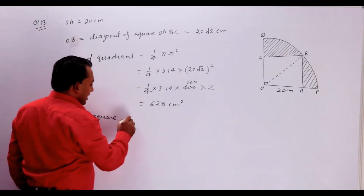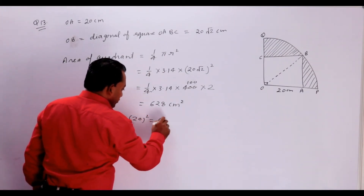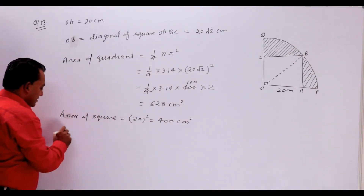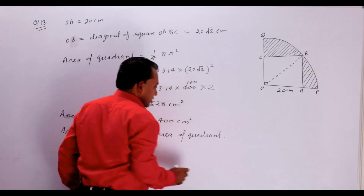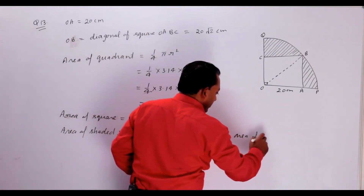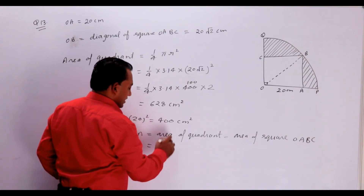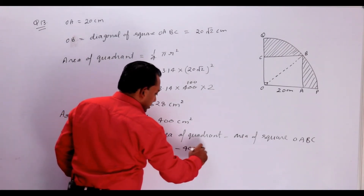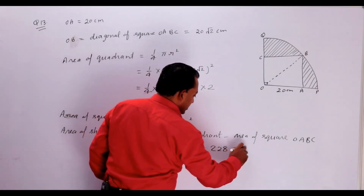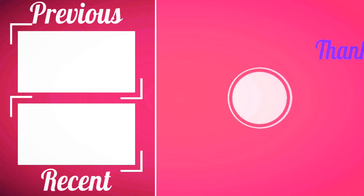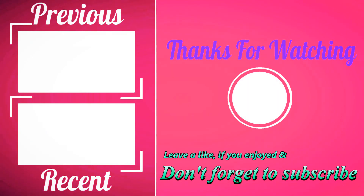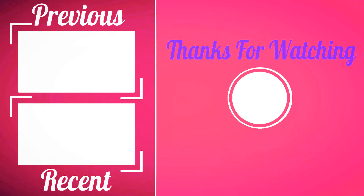Area of square: side square matlab 20 square, yeh aage bacchon 400 centimeter square. Area of shaded region is equal to area of quadrant minus area of square OABC. Area of quadrant hai 628 centimeter square, jabki yeh 400. In dono ka difference? 228 centimeter square.